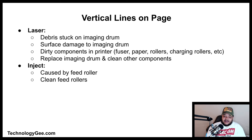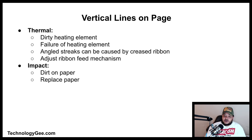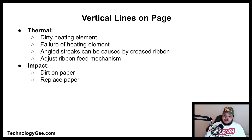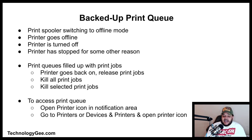For inkjet printers, vertical lines can be caused by the feed roller — clean it if that is the case. For thermal printers, vertical lines are likely due to a dirty or failed heating element. Angled streaks can be caused by a creased ribbon; adjust the ribbon feed mechanism. For impact printers, dirt on the paper is the likely cause — replace the paper.